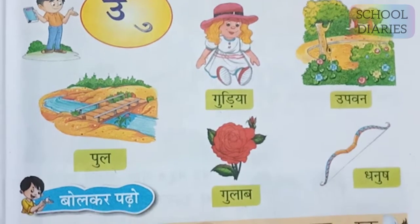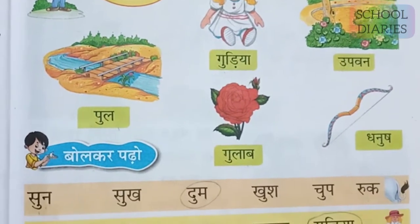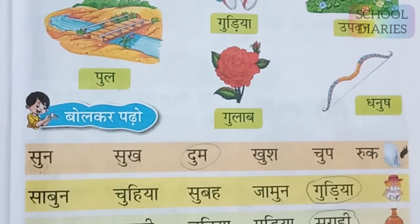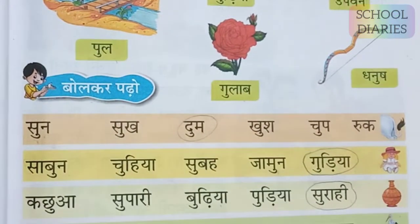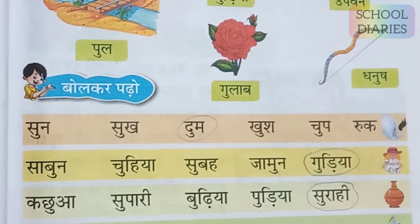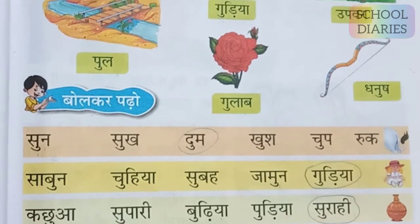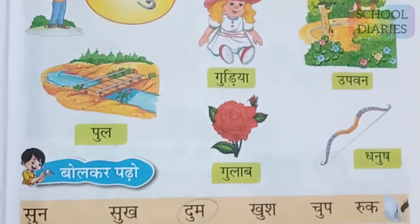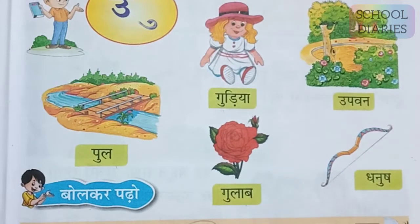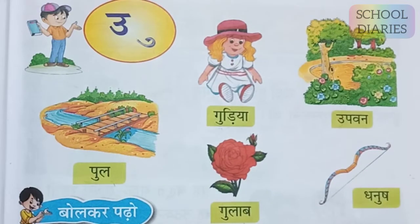Like this, we have to read all the words with choti u ki matra. There are more words given on this page — you can go through them. You can also go through the Hindi explanation video I have already uploaded, where you can find how to read all these words.